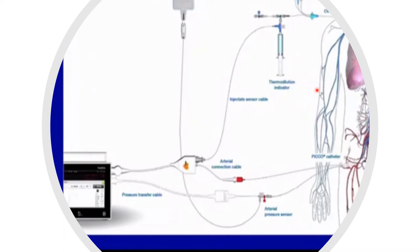In this setup, you can see a central venous access connected with a three-way and a sensor, which is connected to a syringe containing cold saline — and this is obviously attached to the monitor. There is also a transducer from the arterial line connected to the femoral access. Usually we insert the PICO catheter in the femoral access. You can see two sensors: one at the central venous end and another at the arterial end.